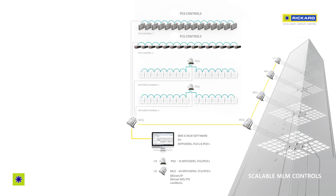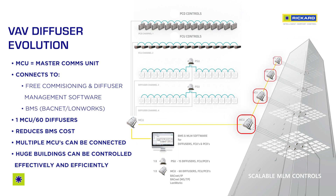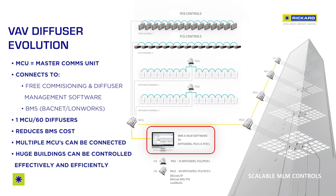Record has a simple way of connecting all the diffusers in a building to the same network and to the building management system. An MCU, or master communications unit, combines the diffuser information from four PSUs into one location. This MCU can be connected to a BMS and other MCUs so that huge buildings can be managed from a central point. Record offers free software for download to manage the diffusers connected to one PSU or hundreds of MCUs.